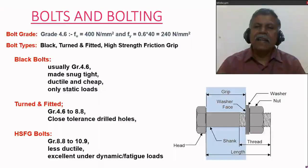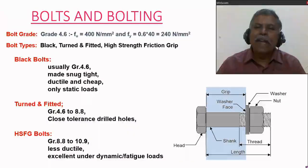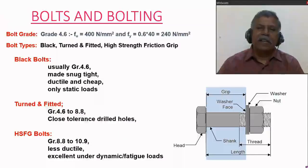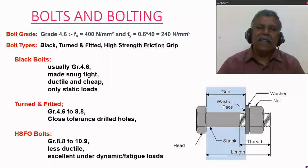Bolts are generally designated by their grade. If the grade is 4.6, the 4 indicates 4 times 100 will give the ultimate tensile strength, and 0.6 indicates 0.6 times 400 will give the yield strength of the bolt. The structural steel sections used in India are made up of grade Fe410, which indicates an ultimate tensile strength of 410 MPa and yield strength of 250 MPa. All sections are made up of mild steel.